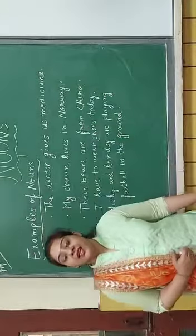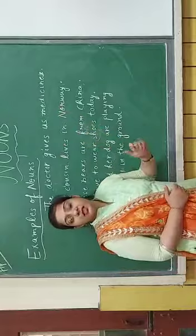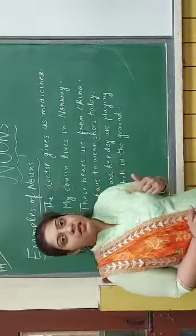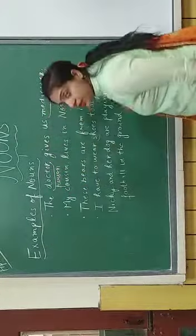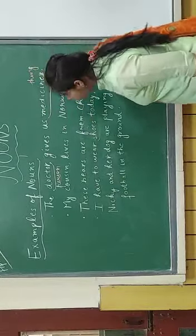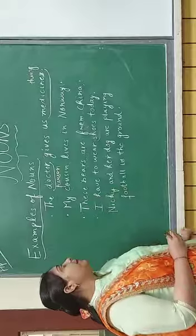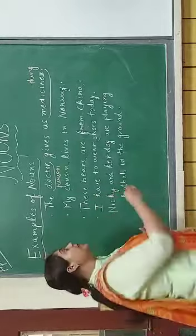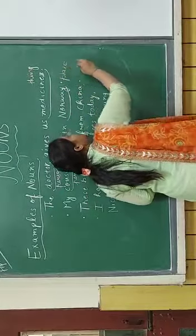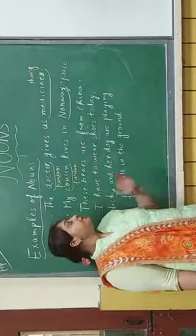Dear students, let us understand nouns with the help of examples. First example: the doctor gives us medicines. Doctor is the name of a person, and medicine is a thing. So in this first example, doctor and medicine will be called nouns. Second example: my cousin lives in Norway. Cousin is the name of a person, and Norway is the name of a place. So cousin and Norway will be called nouns.